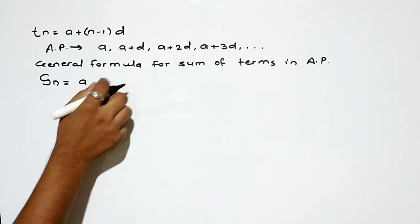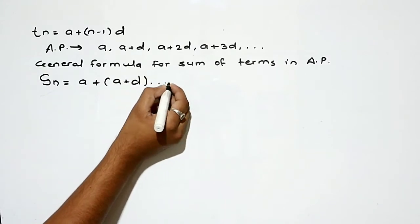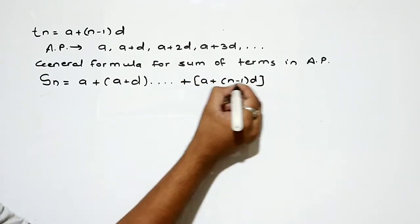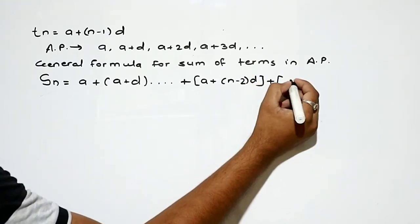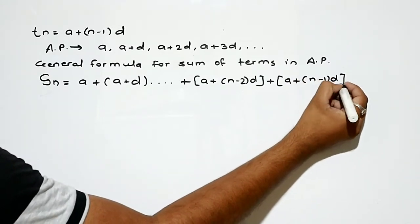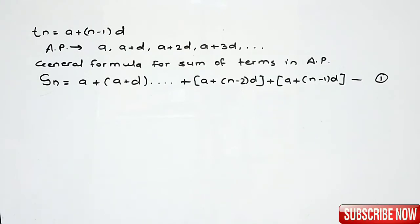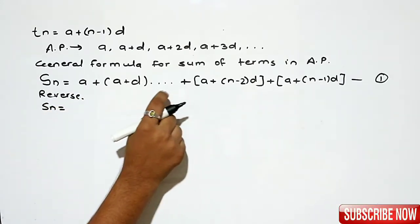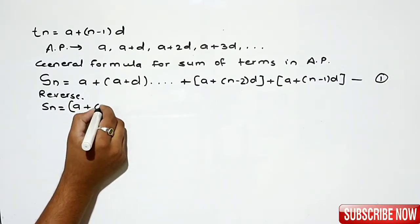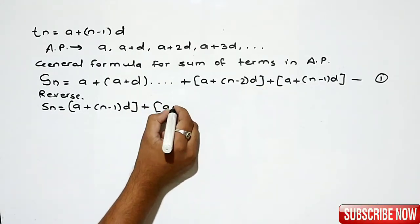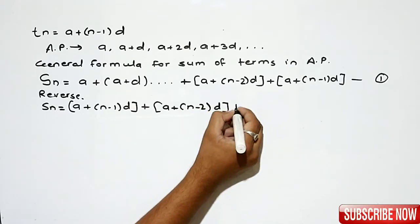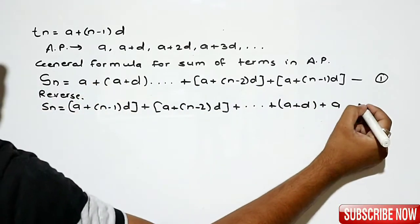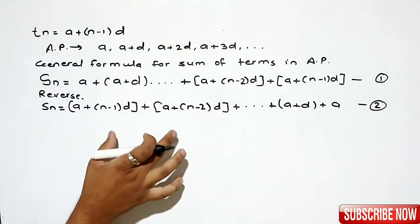...up to the last term a + (n-1)d — this is equation 1. Now if we reverse the sequence, Sn = [a+(n-1)d] + [a+(n-2)d] + ... + (a+d) + a — this is equation 2. Adding equation 1 and equation 2.